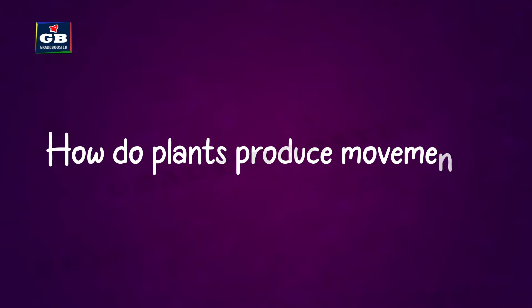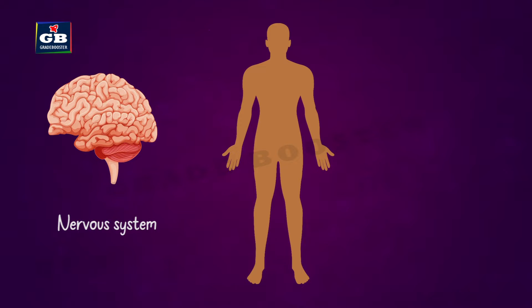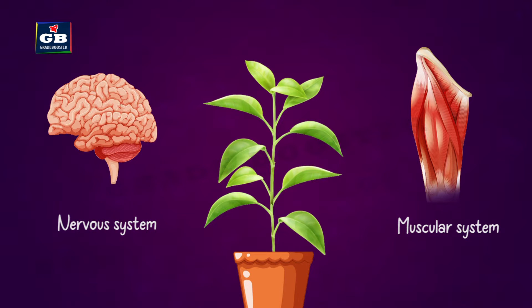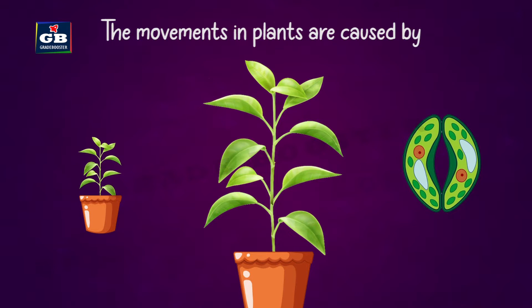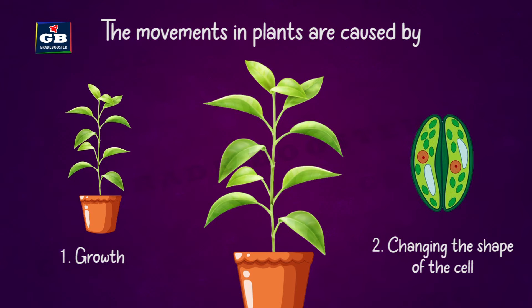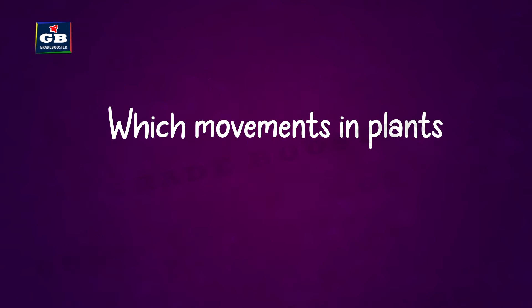How do plants produce movements? Animals produce movements with the help of the nervous system and muscular system. But in plants, both the nervous system and muscular system are not present. The movements in plants are caused either by growth or by changing the shape of the cell.